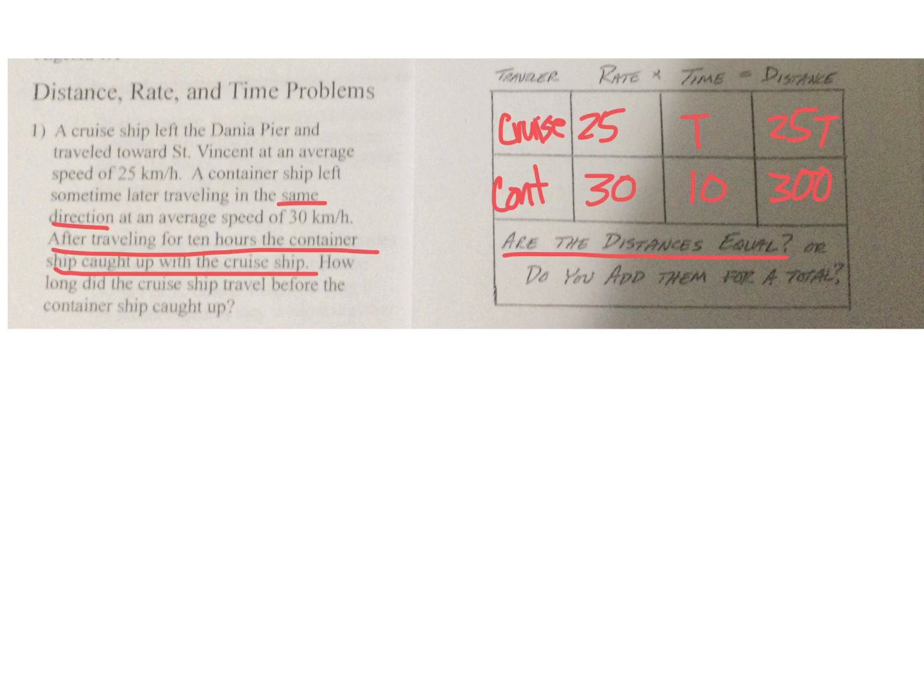Just divide 300 by 25 and you get 12. That means the amount of time that the cruise ship traveled was for 12 hours.